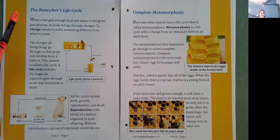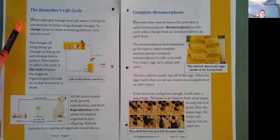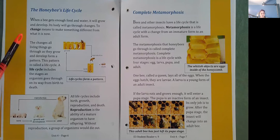The honey bee's life cycle. When a bee gets enough food and water, it will grow and develop. Its body will go through changes. To change means to make something different from what it is now. The changes all living things go through as they grow and develop form a pattern. This pattern is called a life cycle.